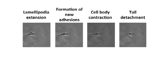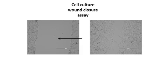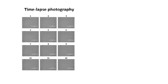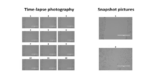Here we will describe two simple methods to carefully study the dynamic nature of cell migration in vitro. The first method is a cell culture wound closure assay, which is commonly used and highly accessible to labs with the most basic setups. In this assay, using a pipette tip a scratch is generated onto a confluent monolayer of cells, which will over time close the wound. The dynamics of cell migration can be studied in detail using time-lapse photography or using snapshot pictures.